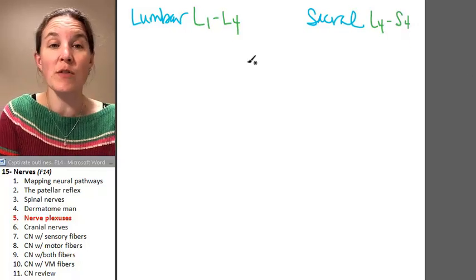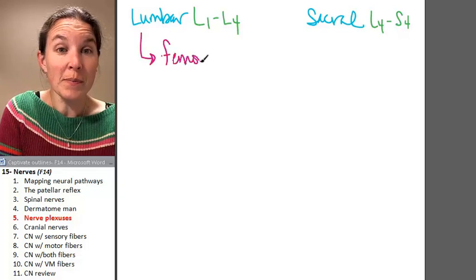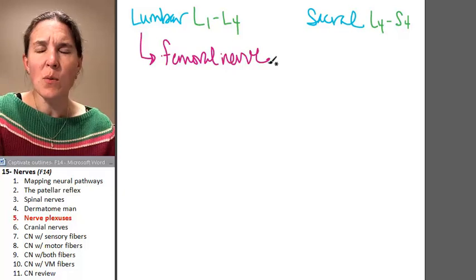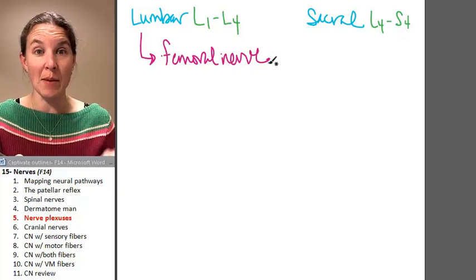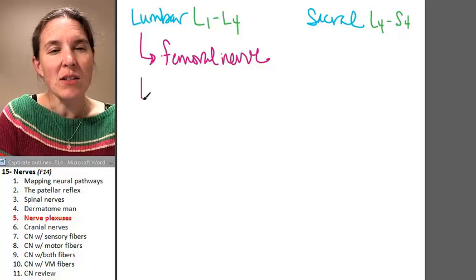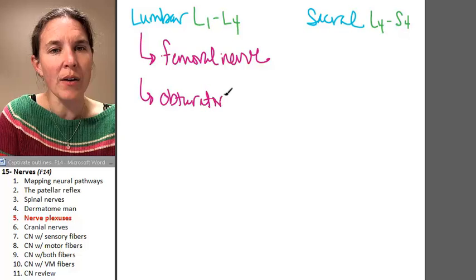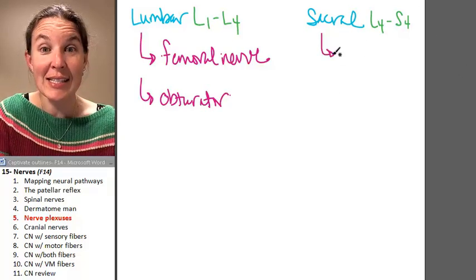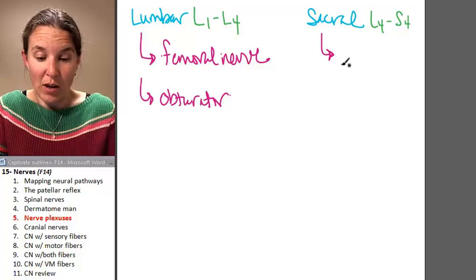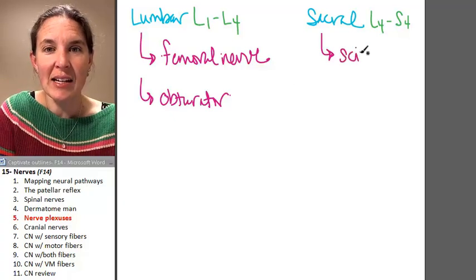And we've got some named nerves from these guys. The lumbar plexus gives rise to the femoral nerve. We probably will not see the actual plexus. We will just be able to see the named nerve itself. It also gives rise to the obturator nerve.